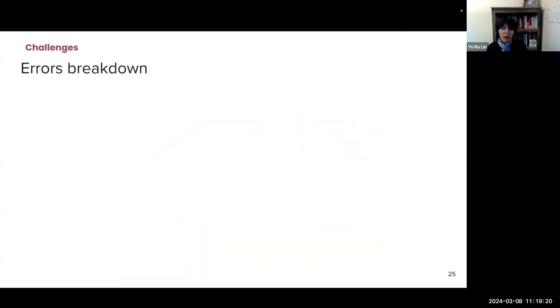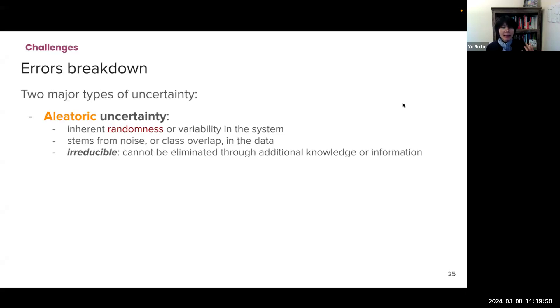So in principle, we can break down errors due to different kinds of uncertainties. So there are two major types of uncertainty. The first is aleatoric uncertainty. So this is the uncertainty from the inherent randomness or variability in the system. It stems from noise or class overlap in the data. And it's irreducible. It cannot be eliminated through additional knowledge or information.